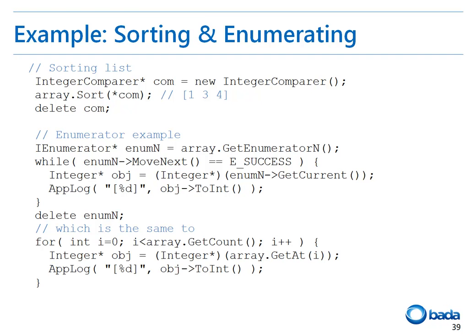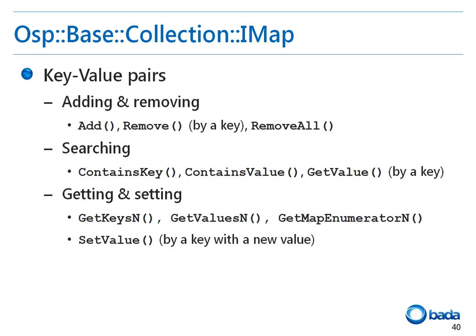Unlike general collections, the ArrayList and LinkedList classes follow the iList interface. They provide the getAt function to get an object from a specific location. The same functionality can be achieved using a for loop in C. An iMap is a collection different from a list, as it is used to store key-value pairs.